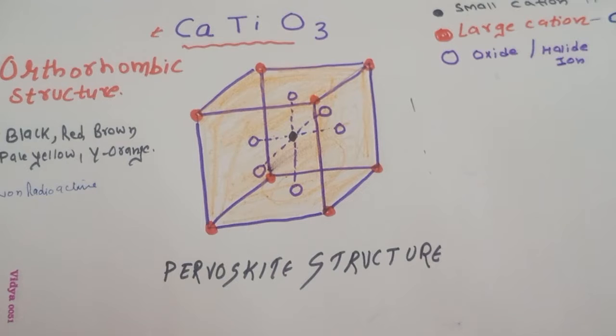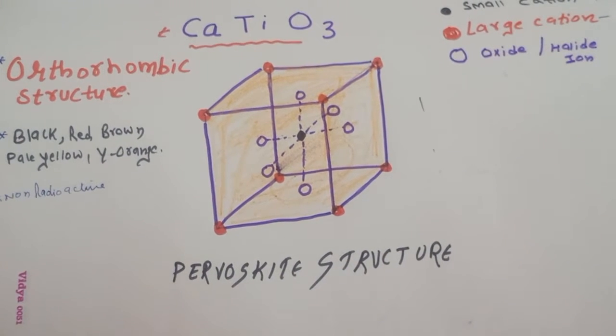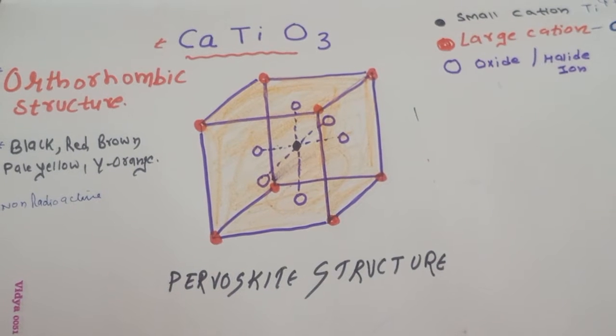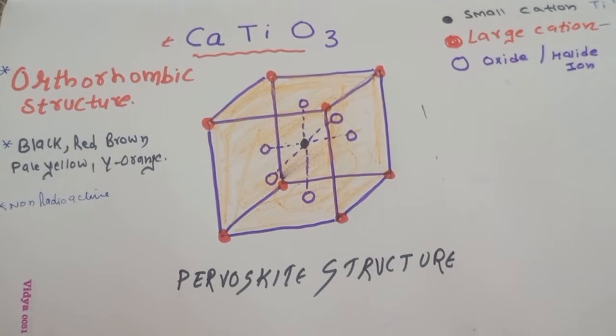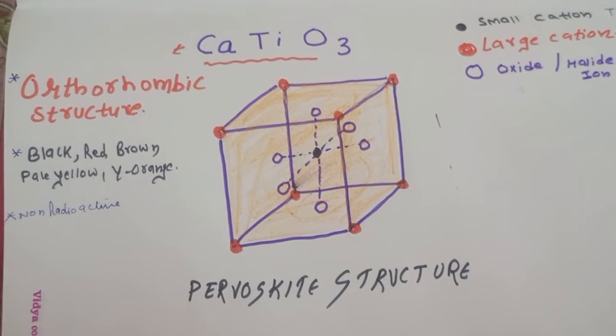So this structure I have drawn is a structure of the perovskite structure. This is orthorhombic in shape, and these perovskite structures, these crystals are generally black, red, brown, or pale yellow or yellowish in color.